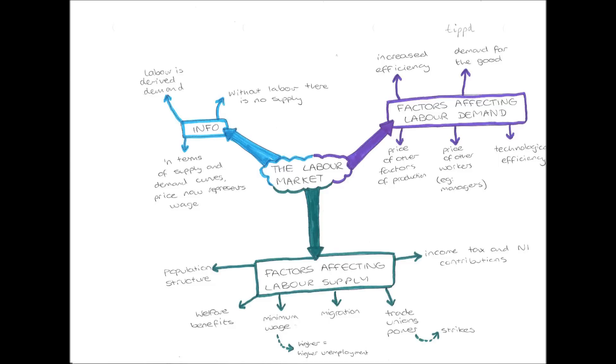The next point I'd like to come on to is trade union power. So if trade unions are very powerful, that means they can call lots of strikes, and every time there is a strike, the supply of labour decreases, because workers are deciding they're not going to work.